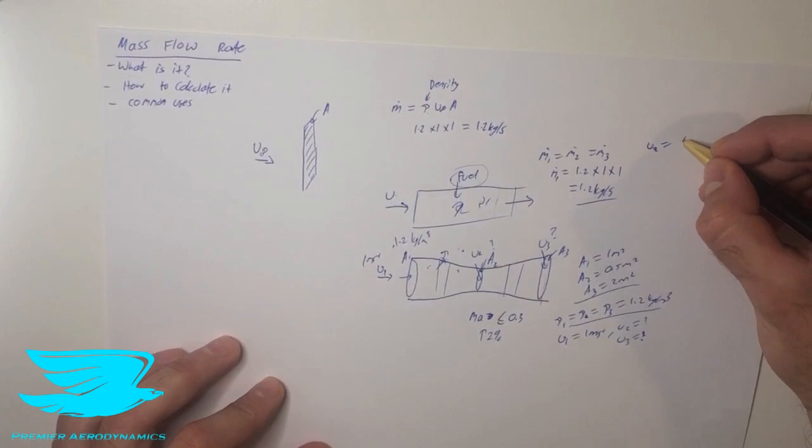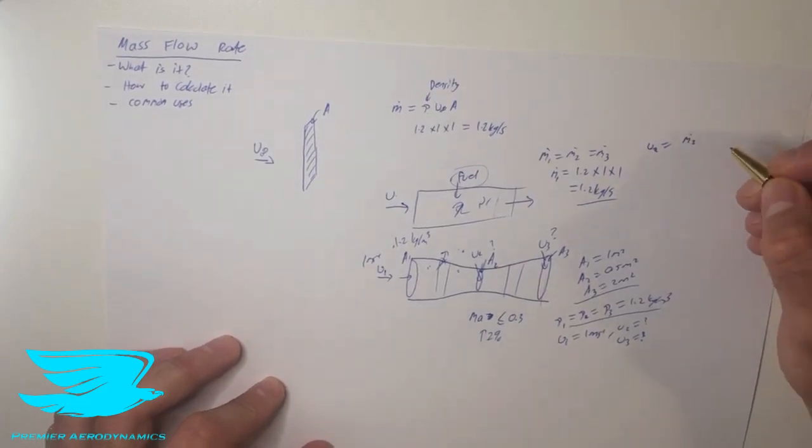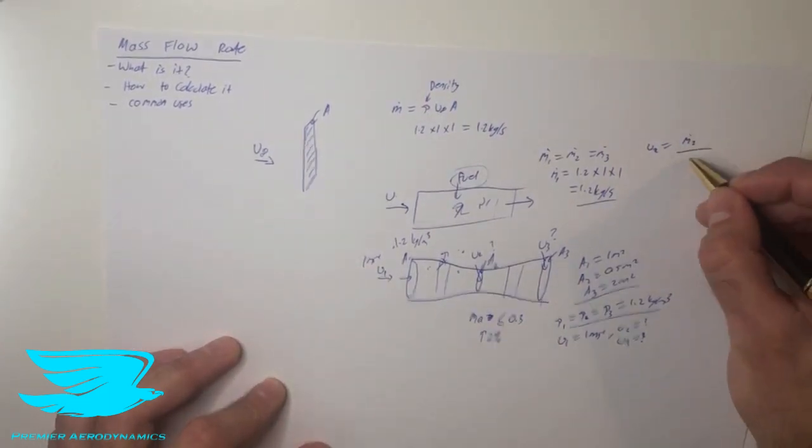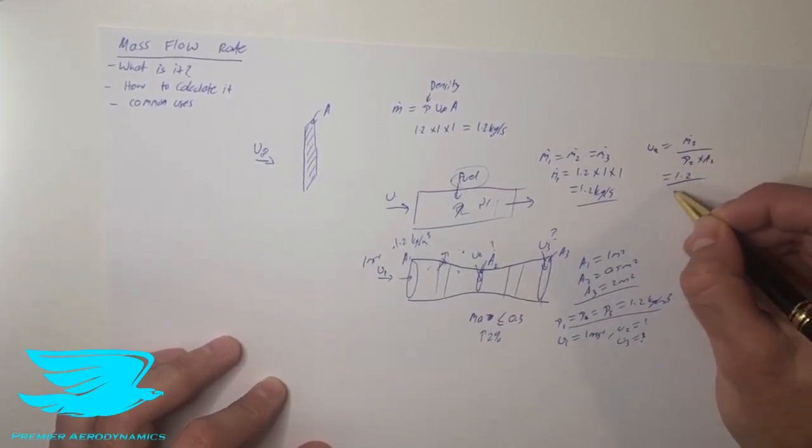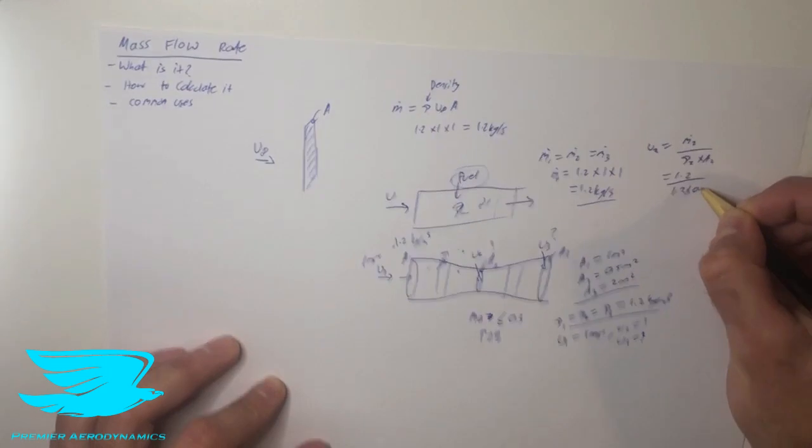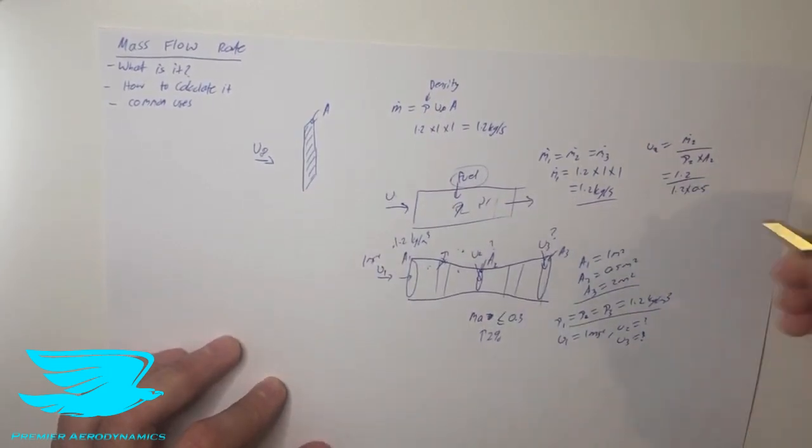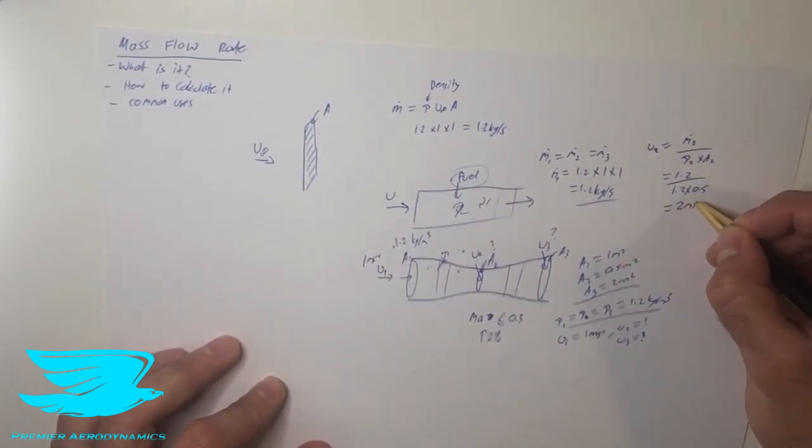So u2 equals the mass flow rate at station 2 divided by the density at station 2 times the area of station 2. So that equals 1.2 divided by 1.2 times 0.5. So if you do the calculation, you'll figure out that that's 2 meters per second.